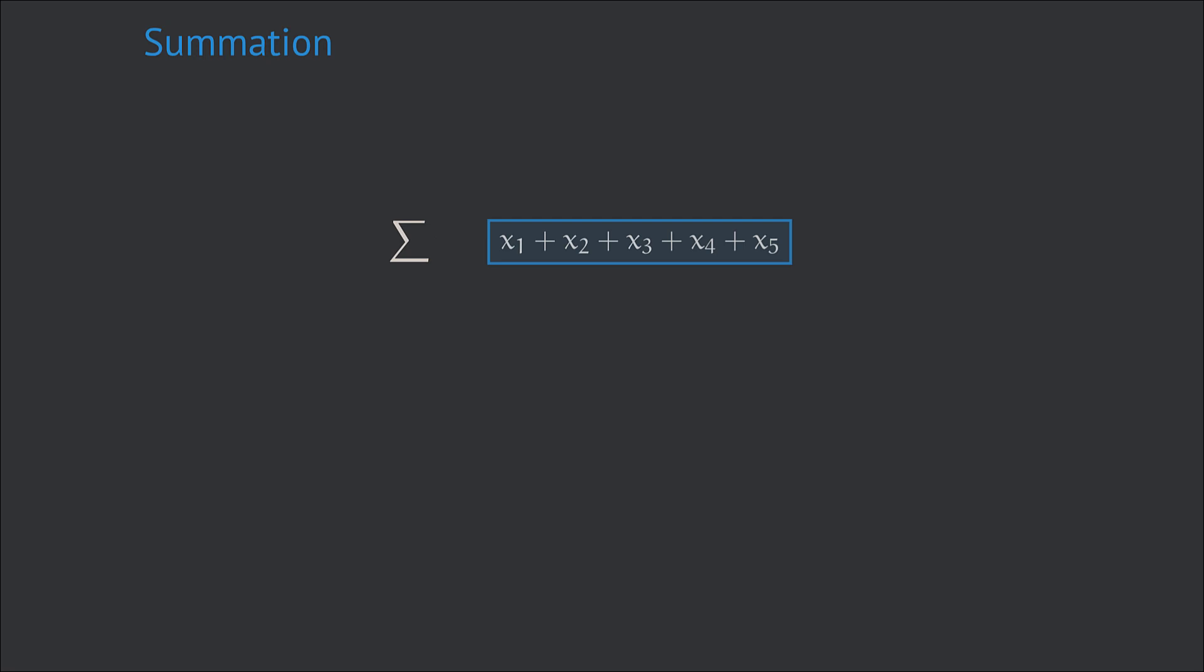If we generalize this index we can denote it just by some other letter, for instance i. So we see that all summands in that long sum have the same structure xi. So instead of writing x1 plus x2 plus x3 plus x4 plus x5 it would be much more efficient to simply write down xi along with the information which values the index i is running through. And that is basically what the summation notation is all about.